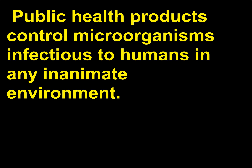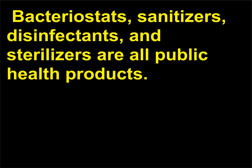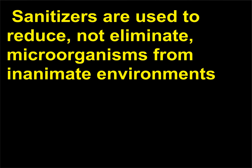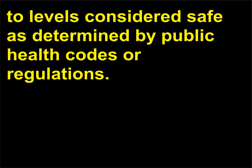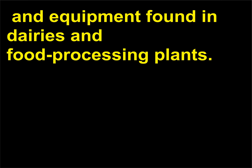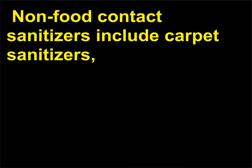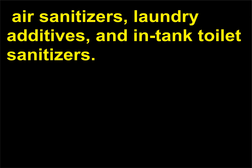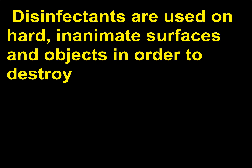Public health products control microorganisms infectious to humans in any inanimate environment. Bacteriostats, sanitizers, disinfectants, and sterilizers are all public health products. Sanitizers are used to reduce — not eliminate — microorganisms from inanimate environments to levels considered safe as determined by public health codes or regulations. Food-contact sanitizers are used on dishes, utensils, and equipment found in dairies and food processing plants. Non-food contact sanitizers include carpet sanitizers, air sanitizers, laundry additives, and in-tank toilet sanitizers.